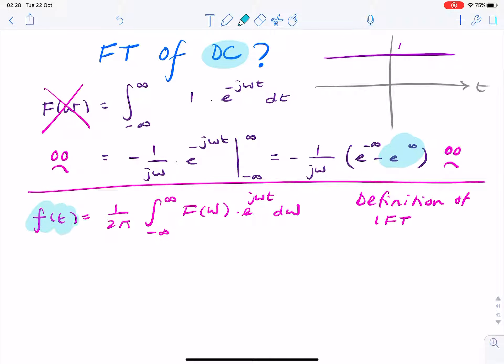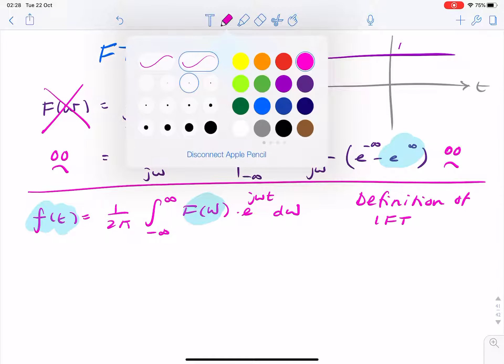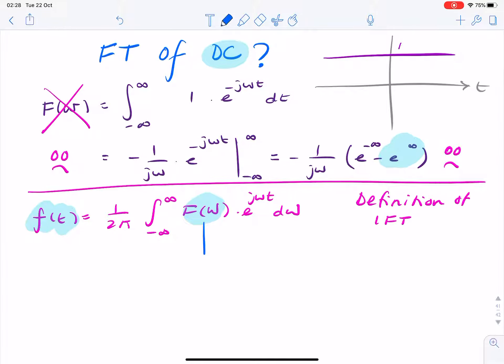Now, f of t is known. My problem is finding f of omega. So this is what I don't know. And this is what I do know. That's my constant, 1.